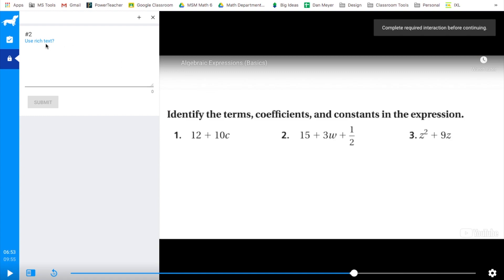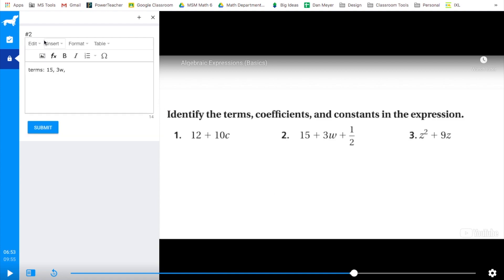Then all of a sudden number two pops up. I'm going to enter my answer for number two. If you notice for one half, I could just do one half like that, which is fine. But if I want, I can click on rich text. Now this gives me a whole bunch of options.